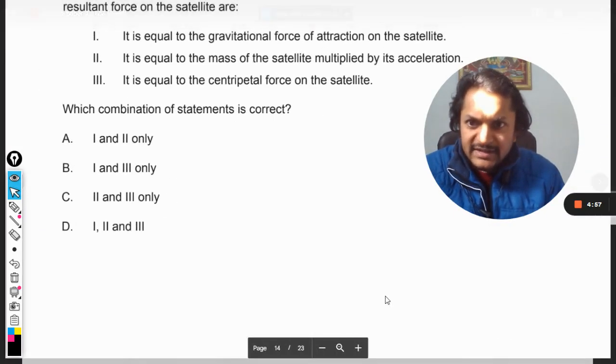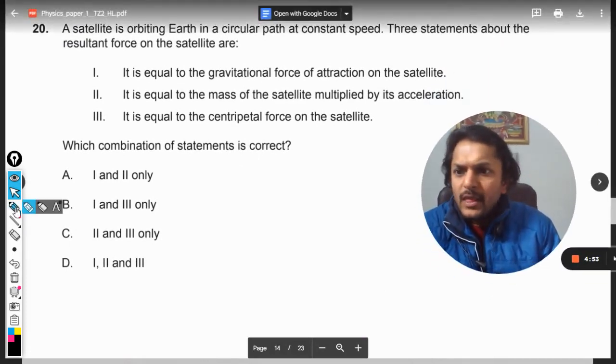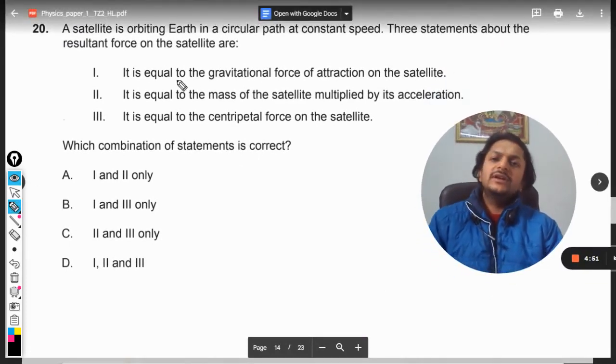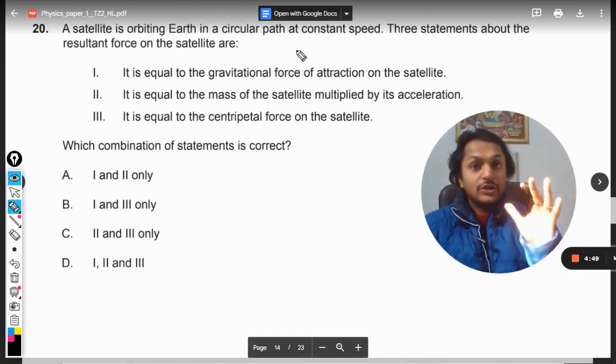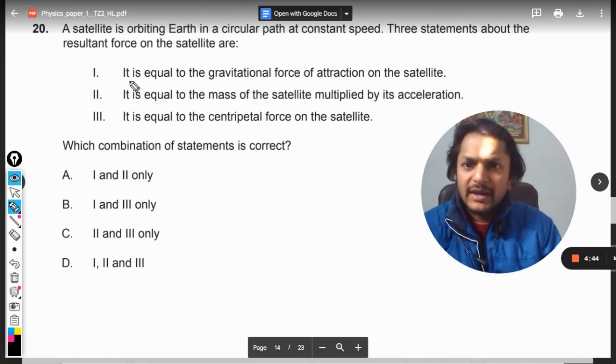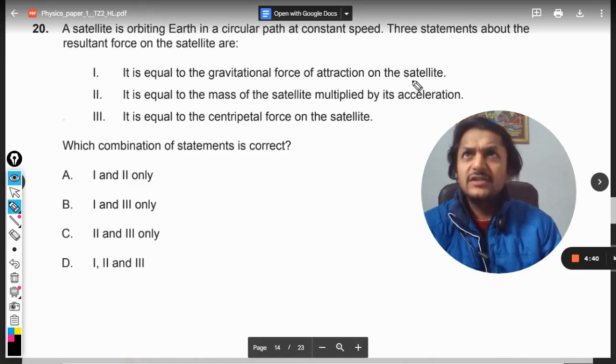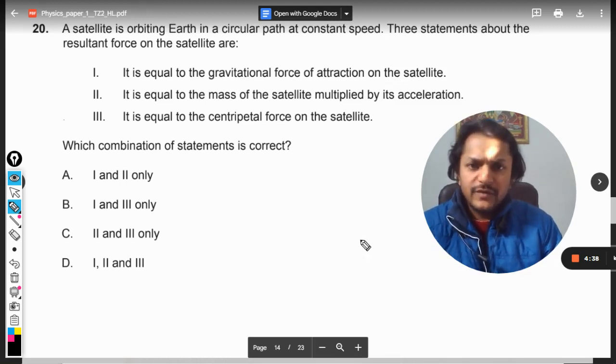Okay dear students, so let us see what is there in this question. Now a satellite is orbiting Earth in a circular path at constant speed. Three statements about the resultant force on the satellite are: number one, it is equal to the gravitational force of attraction on satellite. The resultant force, yeah of course we can say that.